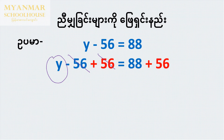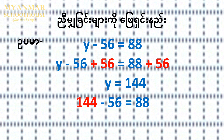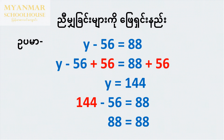The unknown number y: 88 plus 56 equals 144. So y is equal to 144. Substituting back: 144 minus 56 is equal to 88.